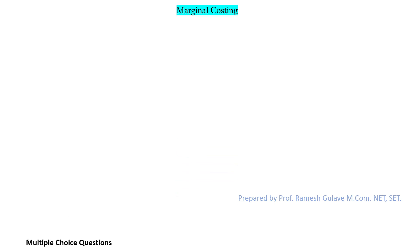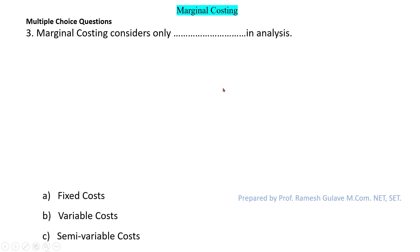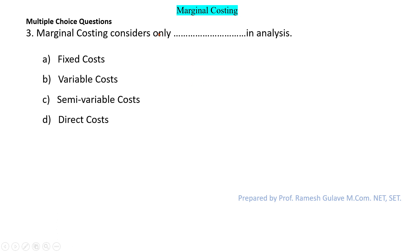The next question says: marginal costing considers only dash in analysis. Options are fixed cost, variable cost, semi-variable cost, and direct cost. We know that marginal cost is also known as variable cost, so option B — variable cost — is the right answer. Marginal costing considers only variable cost.